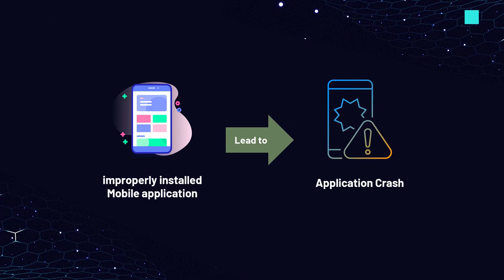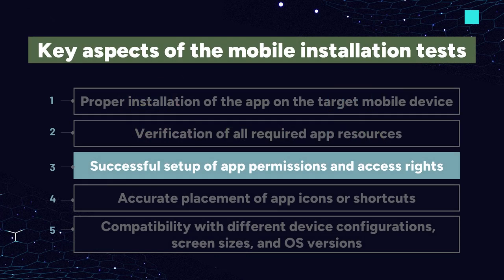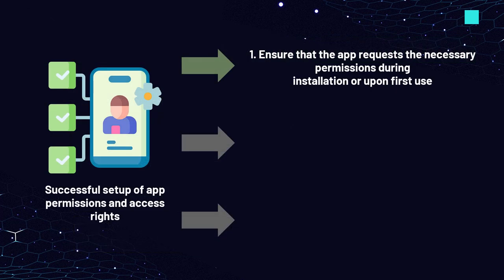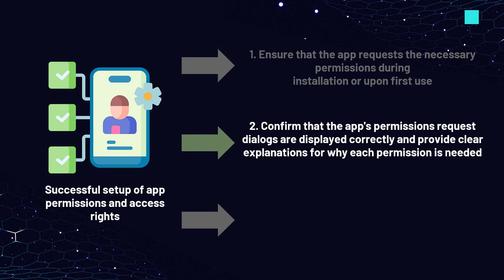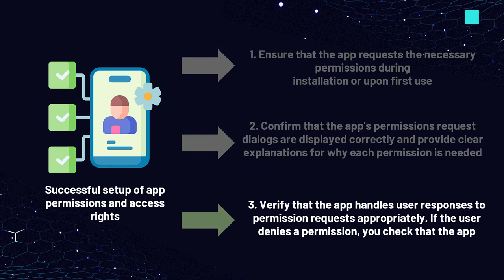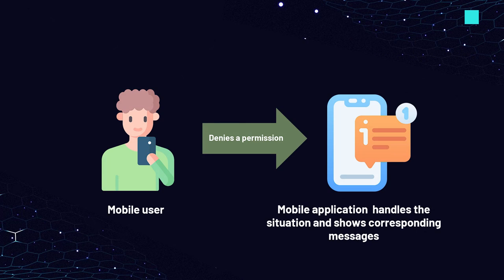The next key aspect is successful setup of app permissions and access rights. During this testing, you verify that the app requests the necessary permissions during installation or upon first use, that permission request dialogs are displayed correctly with clear explanations for why each permission is needed, and that the app handles user responses appropriately. If the user denies a permission, you check that the app gracefully handles the situation, either by providing alternative functionality or by explaining why the permission is necessary.